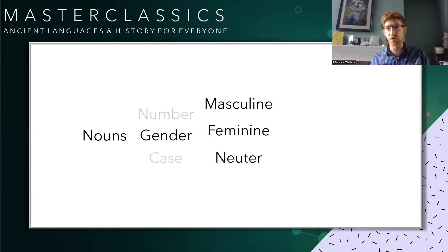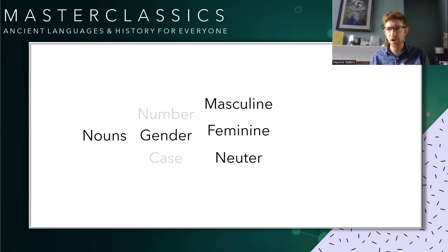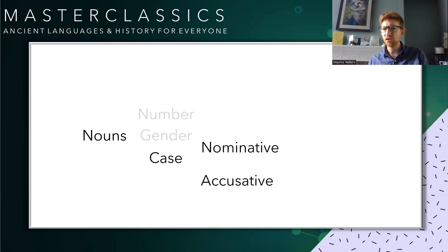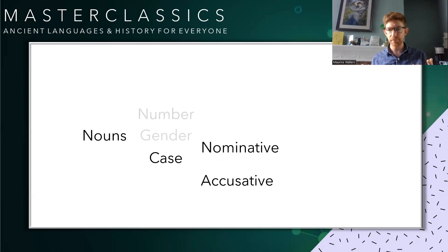Gender is simply whether a noun is masculine, feminine, or neuter — and just to avoid confusion, that's not about whether a noun has a biological sex. It's simply to do with the sound it makes. The unusual one — especially if you've done French — is case. Nouns have a number of cases; I've only put two here. Cases have to do with the way the noun operates in the sentence — the noun's function.